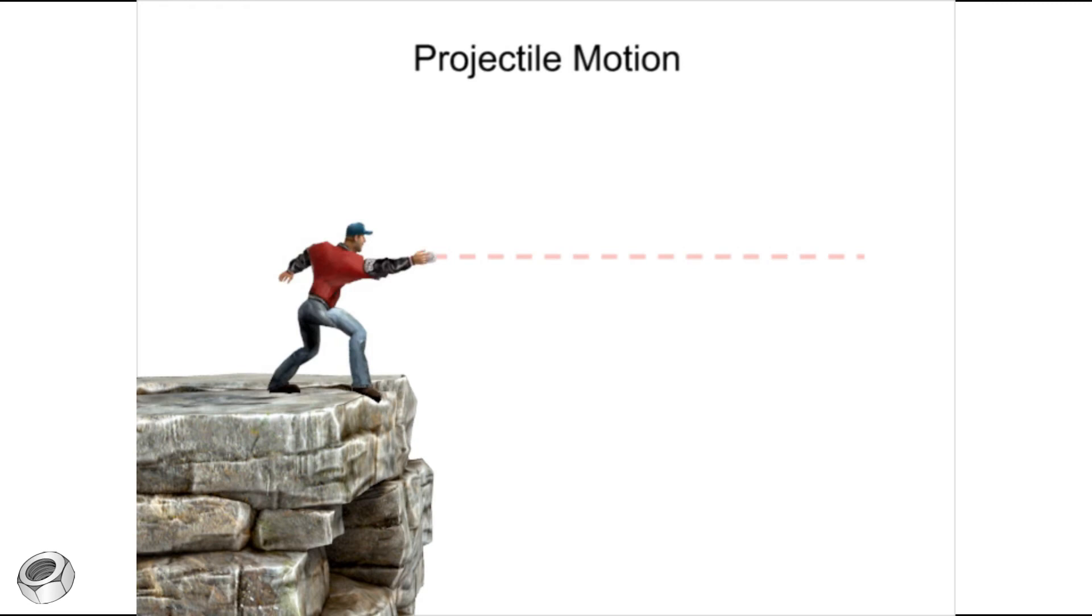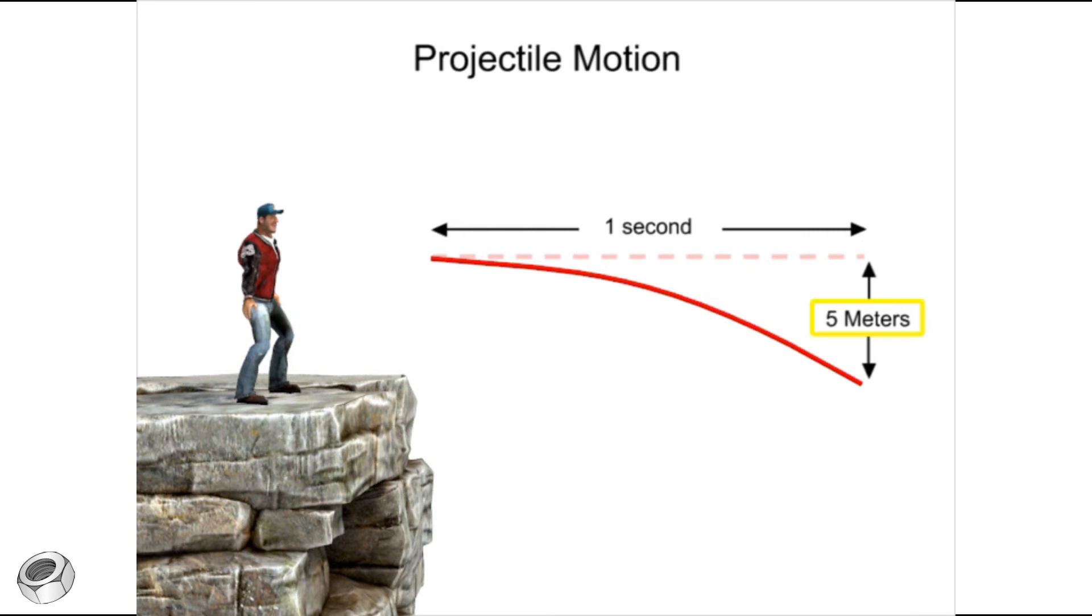After one second, the ball will have fallen five meters from the imagined line gravity-less travel. No matter how fast the person throws the ball, this fallen distance of five meters after one second of airtime will remain the same.